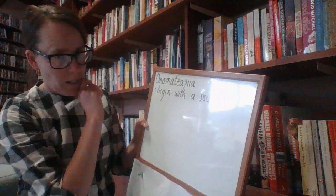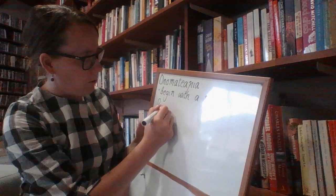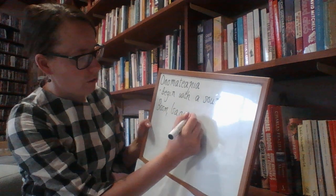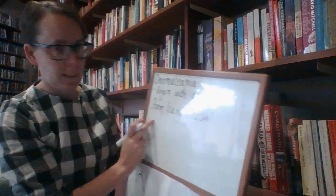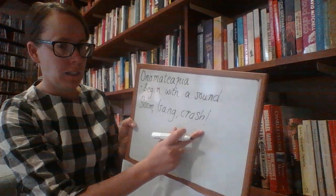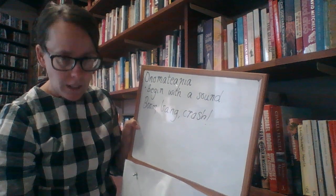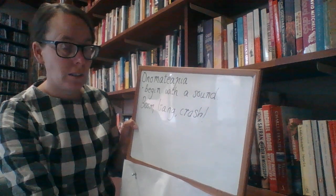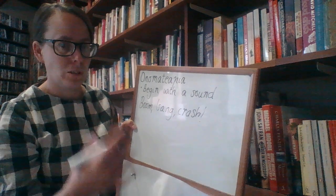I'll give you a couple of examples of how you might do this. You might start your story by saying: Boom, bang, crash! Three different sounds — boom, bang, crash — and I've got an exclamation mark at the end of that sentence to show how exciting it is. Straight away, the reader would be reading that and thinking, wow, what's going on? And they're really interested and they want to read more.